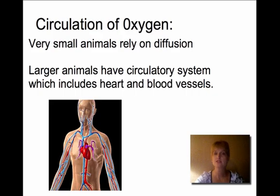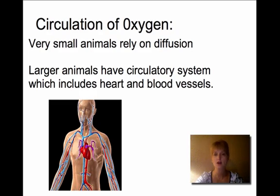Animals have to circulate that oxygen. Very small animals can rely on diffusion to circulate oxygen through their body, but larger animals need circulatory systems — a heart and blood vessels — to get oxygen throughout all the cells of their body.